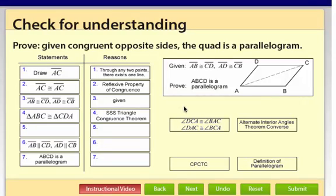And then we need to talk about parallel lines. And the way you talk about parallel lines, at least when you're working with quadrilaterals, is typically using alternate interior angles. So we're going to say angles DCA and BAC are congruent, and also angles DAC and BCA are congruent.